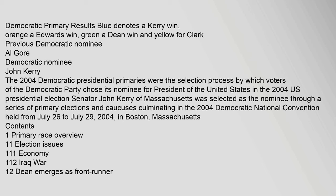The 2004 Democratic presidential primaries were the selection process by which voters of the Democratic Party chose its nominee for President of the United States. Senator John Kerry of Massachusetts was selected as the nominee through a series of primary elections and caucuses, culminating in the 2004 Democratic National Convention held from July 26 to July 29, 2004, in Boston, Massachusetts.